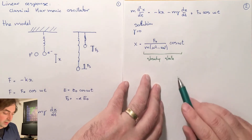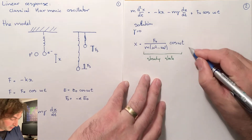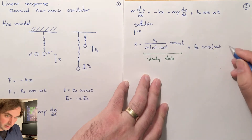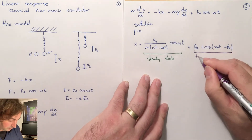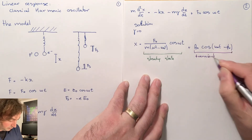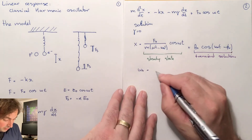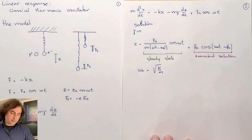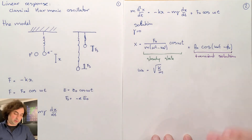Why this is called the steady state becomes clear when we look at the case where gamma is non-zero. The steady state solution oscillates with the driving frequency. Then we find a term where we are free to choose the amplitude of the oscillation as well as the phase of the oscillation, and this we will call the transient solution.